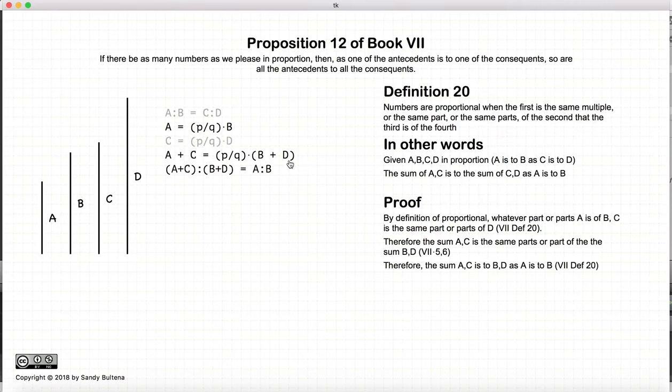Again, going back to what it means to be proportional, if a plus c is the same fractions of b plus d that a is of b, then they are considered in proportion. So in other words, the ratio of a plus c to b plus d is equal to the ratio of a and b. And that is essentially the proof of this proposition.